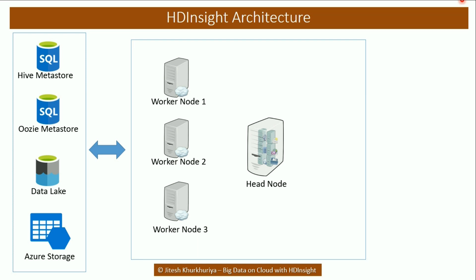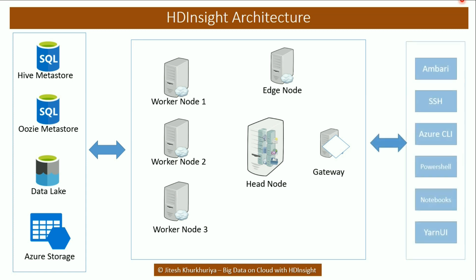We also have something known as edge nodes. They act as the network interface between the cluster and the outside world. You may not want to expose the cluster to every end user, and that's when the edge node acts as the connection between the cluster and the end user. The gateway nodes are for management and security. The entire cluster is implemented on a virtual network, and you can access various nodes only through these gateways — it manages user authentication as well as request forwarding.